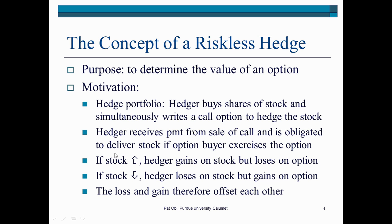If the stock goes down in price, the hedger loses on the stock but gains on the option. On the flip side, if the stock goes up, you will lose on your option, but then you gain on the stock. So you do have an offset, which is what provides the hedge.